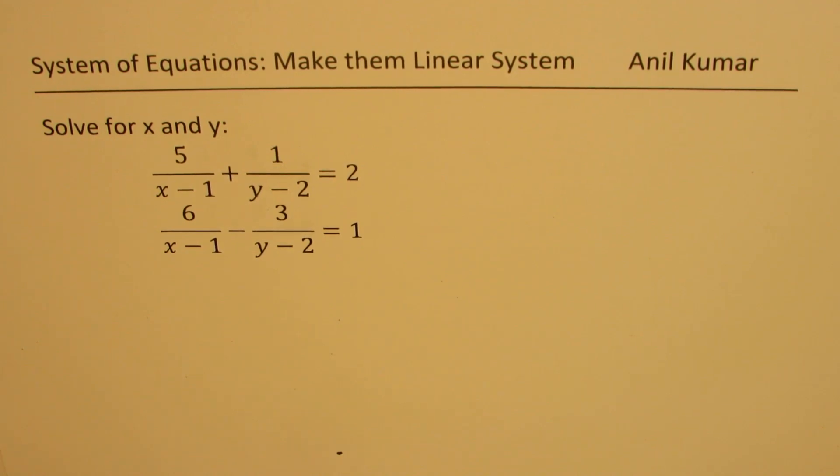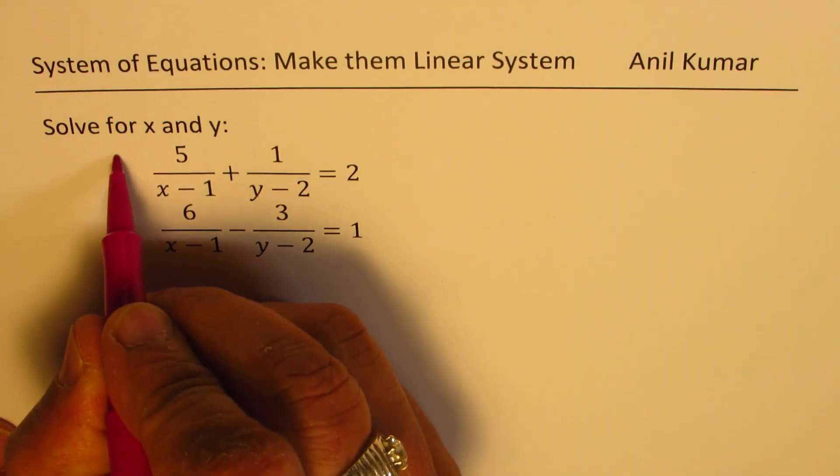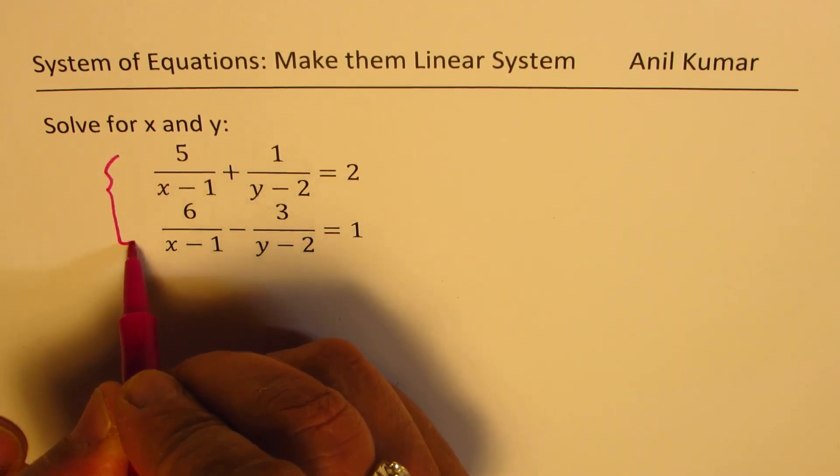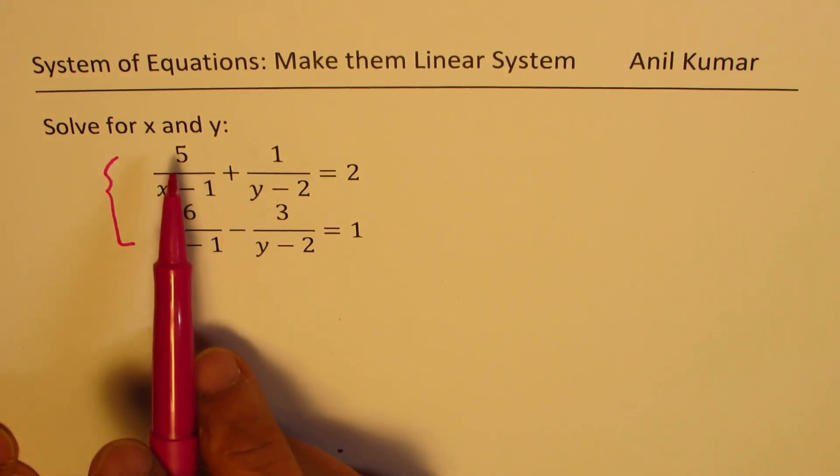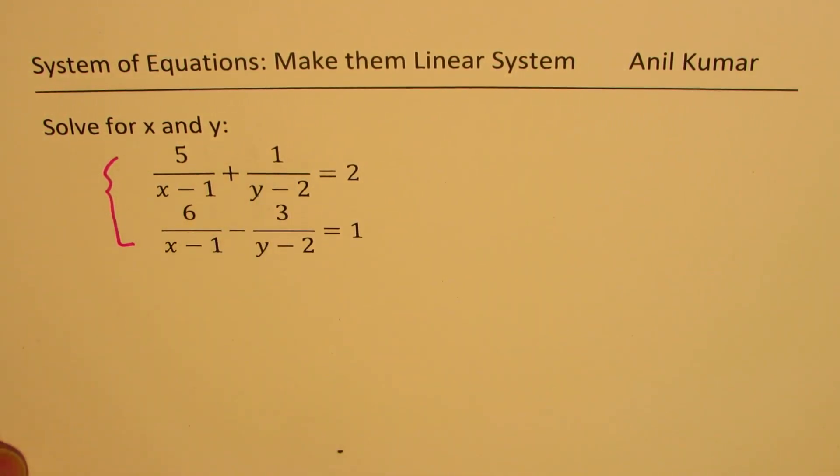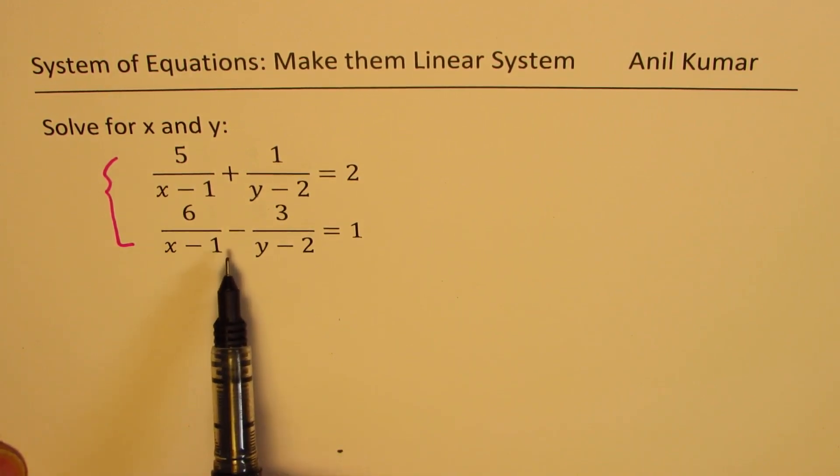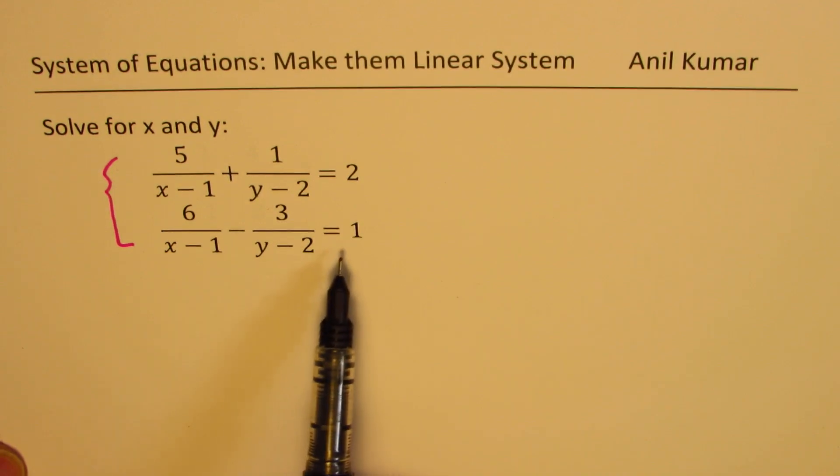So here is one of the examples. You can always pause the video, copy the question, solve. So we have a system of equation which includes these two equations: 5 over x minus 1 plus 1 over y minus 2 equals 2, and 6 over x minus 1 minus 3 over y minus 2 equals 1.